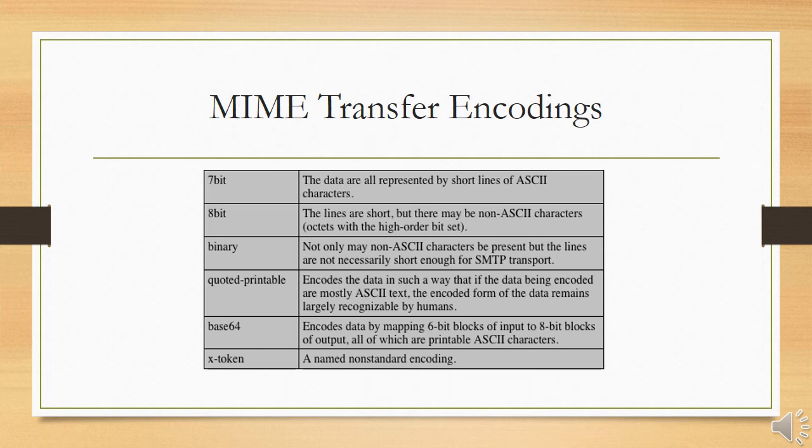The quoted-printable transfer encoding is used when the data consists largely of objects that correspond to printable ASCII characters. In essence, it represents non-safe characters by hexadecimal representation of their code and introduces reversible line breaks to limit message lengths to 76 characters.